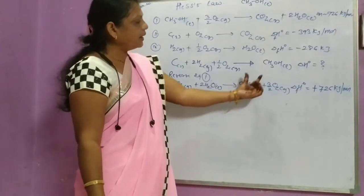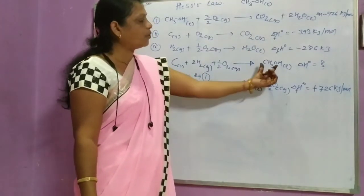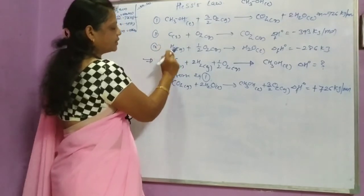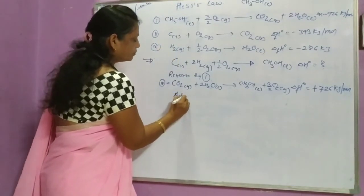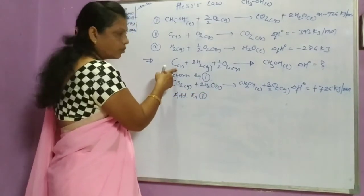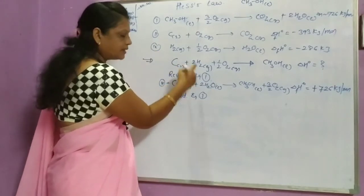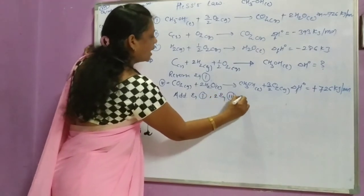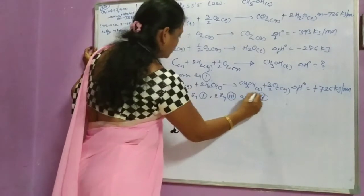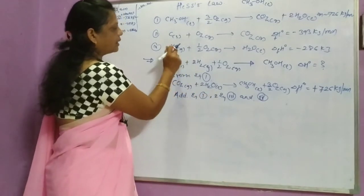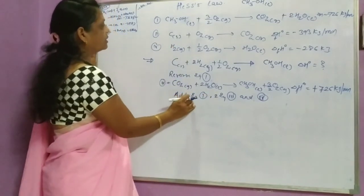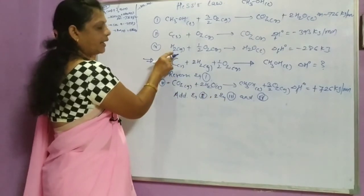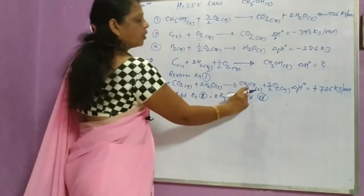In equation 4, the reactant side has CO2 plus twice H2O, and we need carbon plus twice H2 on the reactant side. We add equation number 2 for carbon. There is only one H2 in equation 3 but we require twice H2, so we use two times equation number 3. Then we add equation number 2 for carbon, two times equation number 3 for H2, and equation number 4 for CH3OH.